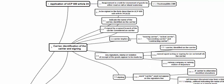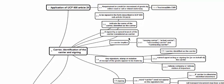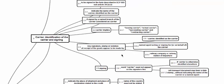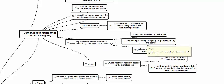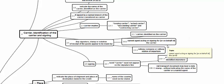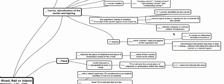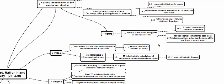The document should be issued by the carrier, signed by the carrier, and indicate the name of the carrier — identity and capacity should be made clear. Any signature, notation, or stamp of having received the goods should appear to have been made by the carrier identified as carrier, or a named agent acting for and on behalf of the carrier, or by the railway company. The stamp of a railway station of departure is considered as a receipt by the railway company and is acceptable in lieu of a signature.